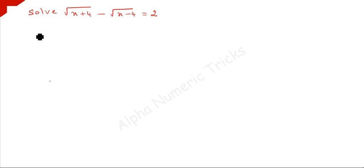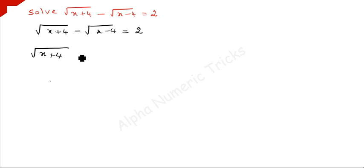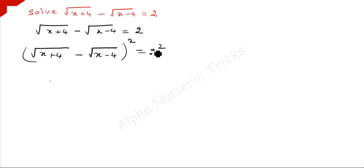We are going to solve this problem: square root of x plus 4 minus square root of x minus 4 is equal to 2. What we have to do is square both sides to remove the square root. So we have square root of x plus 4 minus square root of x minus 4, the whole squared, is equal to 2 squared.